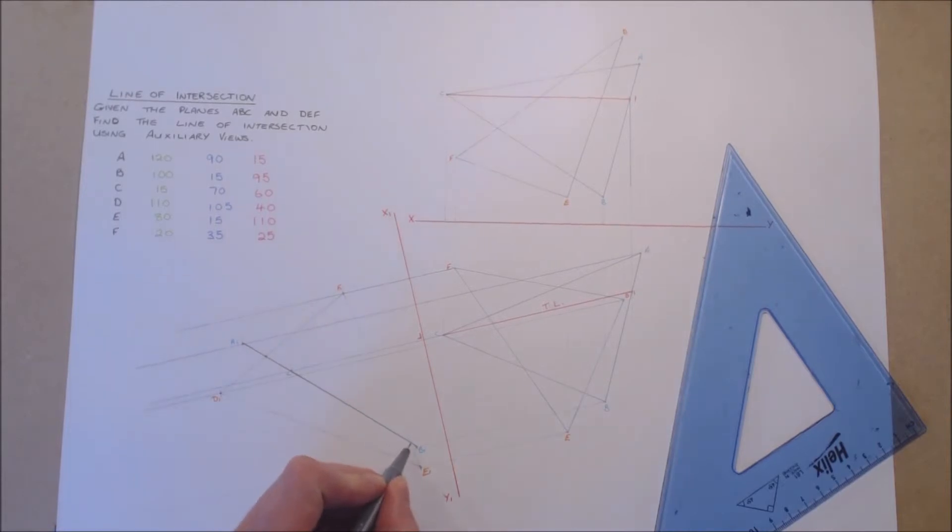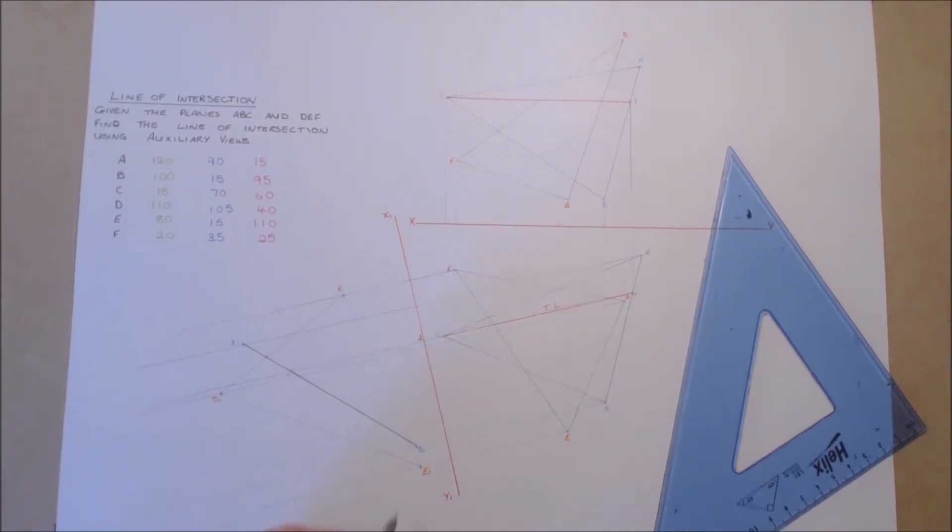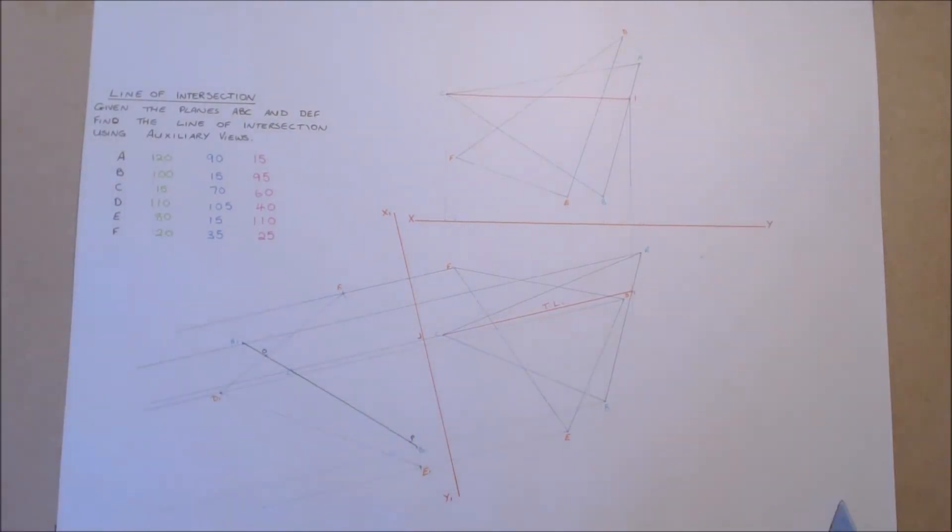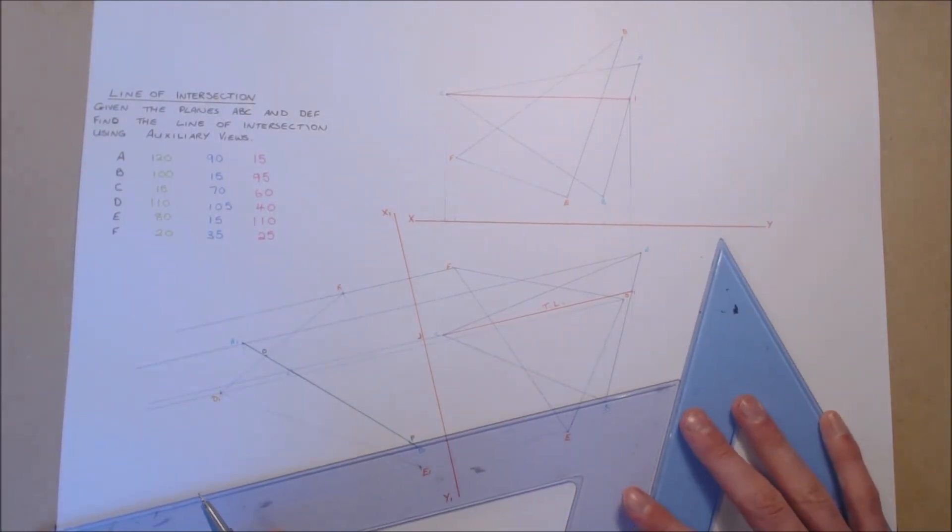Where the plane A, B, C intersects plane D, E, F in our auxiliary view gives us two points on our line of intersection. We can then find these points in the plan and elevation by projecting back through the views.